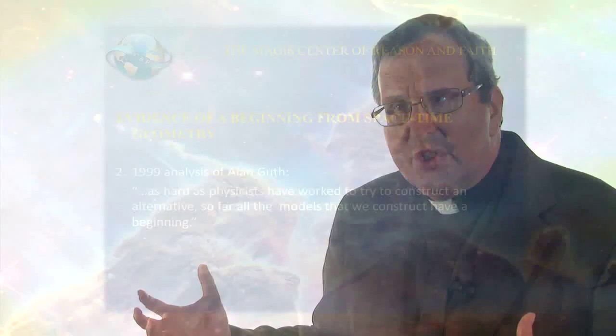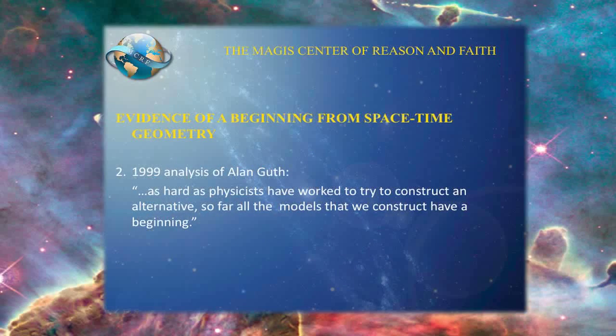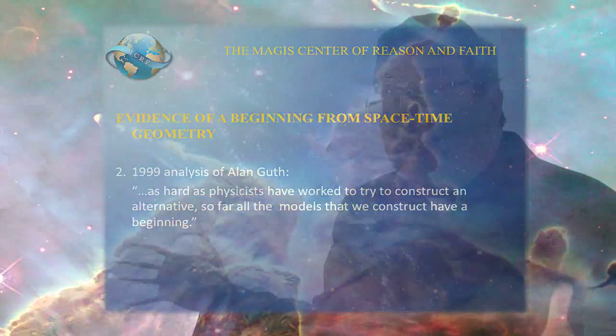Then in 1999, Alan Guth, an American cosmologist at MIT, did an assessment of all of the various mathematical modeling that had been done of inflationary model universes. What he discovered was that, try as physicists have to get out of a beginning of an inflationary model universe, they have been unsuccessful to date. Every single model of an inflationary universe requires a beginning. The universe can't be eternal into the past, given the dynamics of space-time geometry. This second piece of evidence collates with the Borda-Vilenkin 1993 proof.